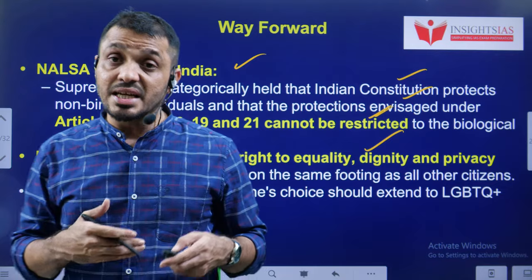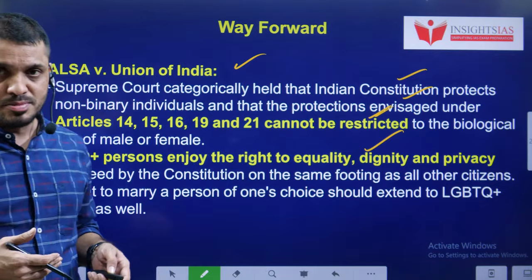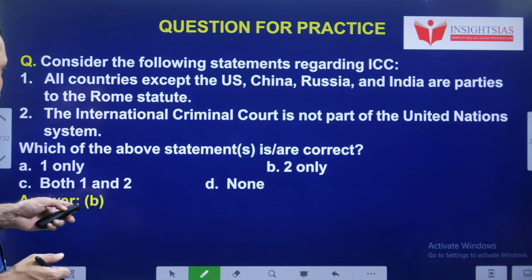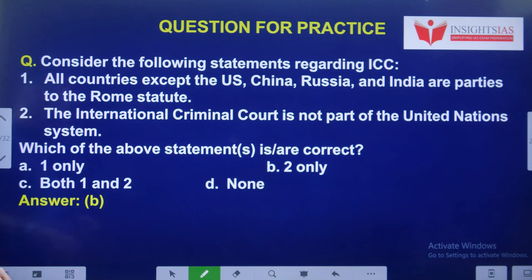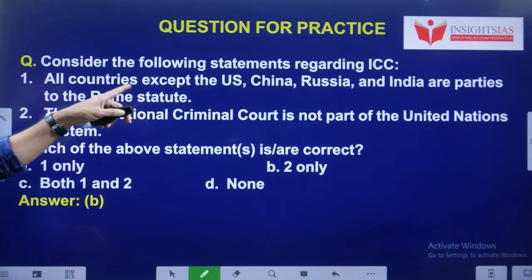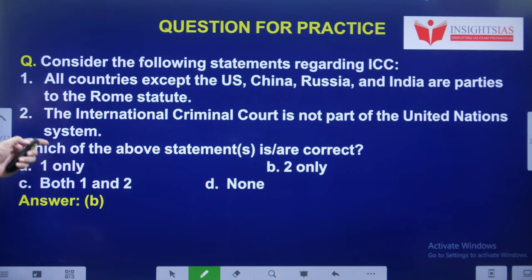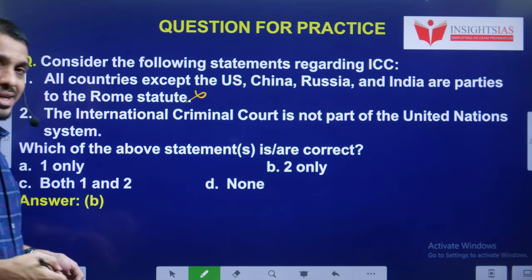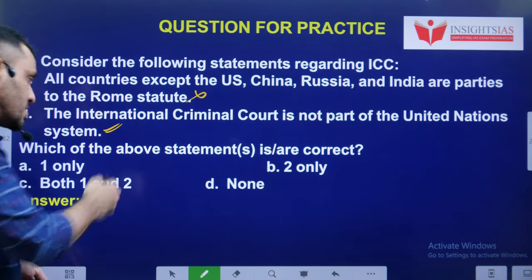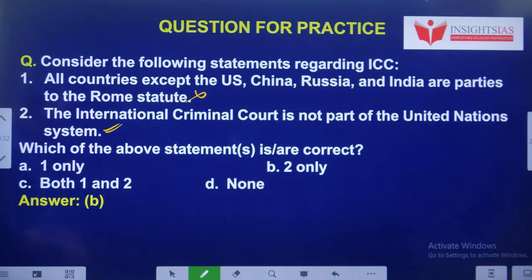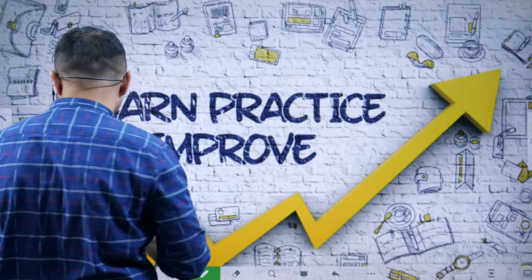Yesterday's video question answer: the answer is B — all countries except the US, China, Russia, and India are parties to the Rome Statute. The ICC is not part of the United Nations system. Now we will see today's question.